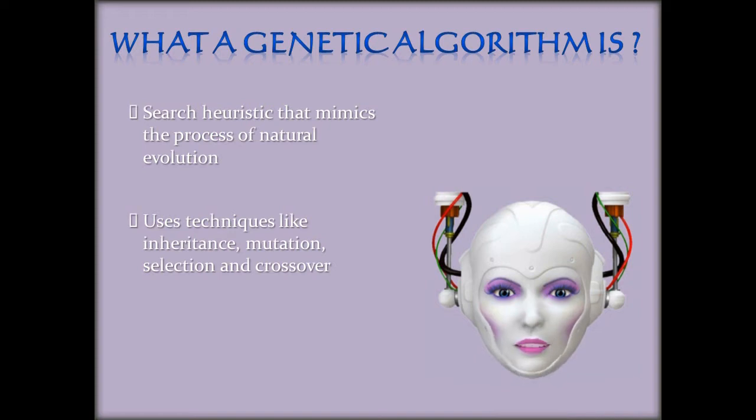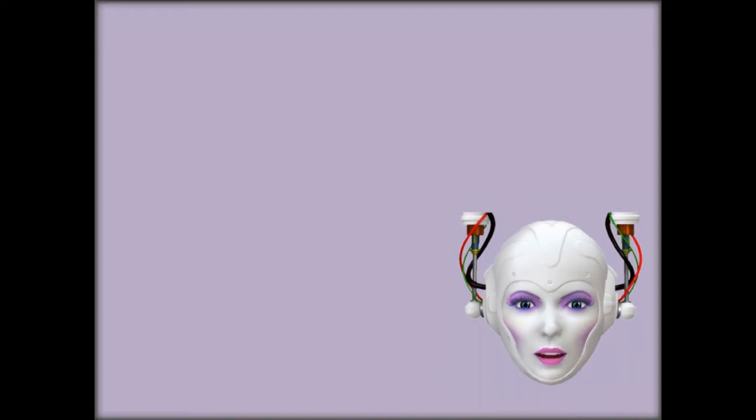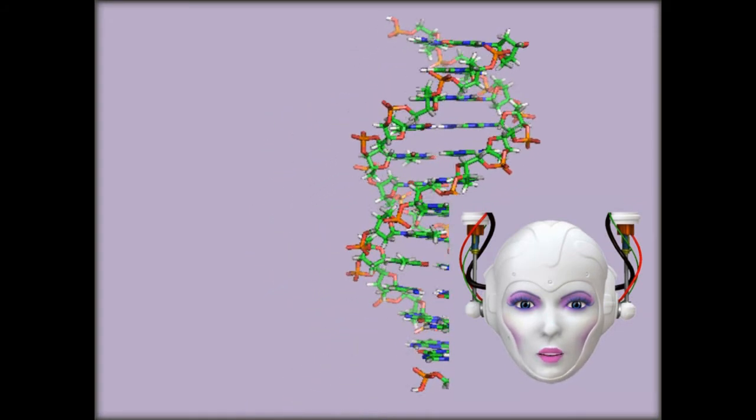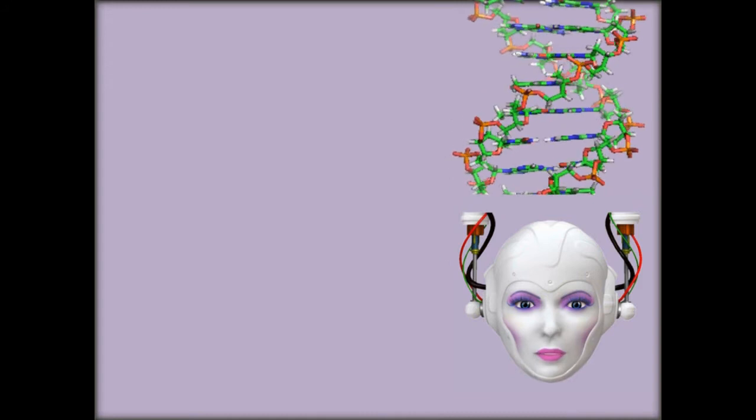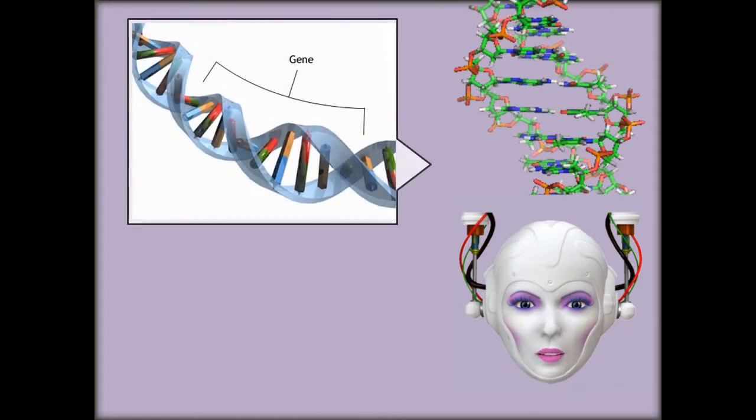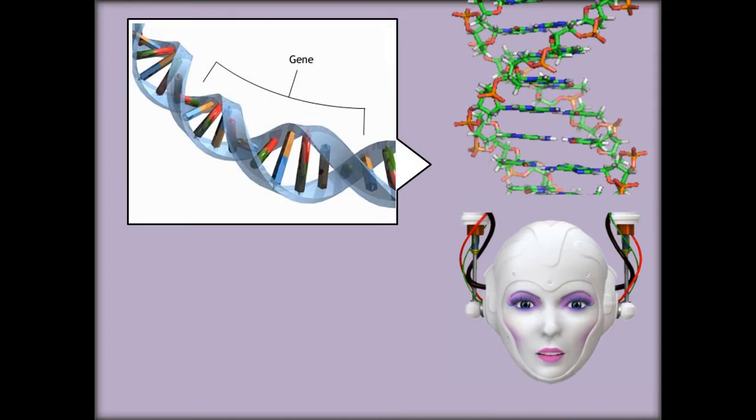But before going any further, let's have a short biology lesson. Every organism has a set of rules describing how that organism is built up from the tiny building blocks of life. These rules are encoded in the genes of an organism, which in turn are connected together into long strings called chromosomes.